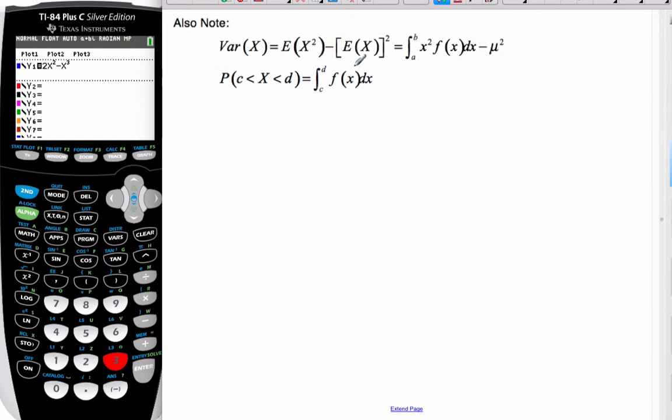Also know that for the variance, here's a formula for variance. And if I look at continuous, and it's in my formula booklet, I get x squared times x, that area between a and b, minus mu squared. Again, very similar to discrete.